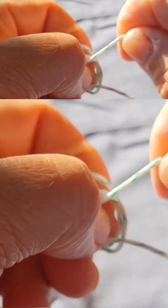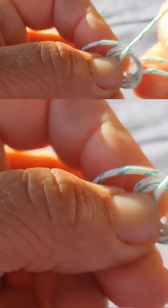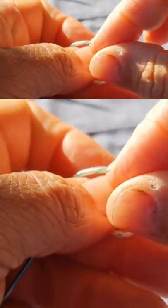Reach under through there, make a third loop next to the other two that's slightly smaller again. Put that back through the middle of all three of your loops, like so.